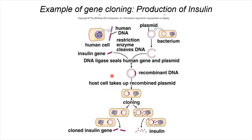Host cells such as E. coli take up the recombinant plasmid. E. coli can reproduce asexually by cell division, producing clones of cells with many copies of the insulin gene. The bacteria are then induced to express the insulin gene into insulin hormone — these bacteria act like mini factories, able to produce large amounts of insulin in a short time. The insulin is then collected and purified before being distributed to diabetic patients.